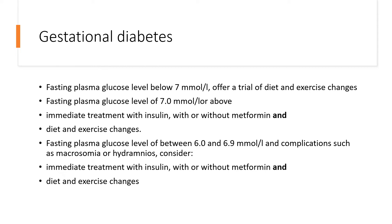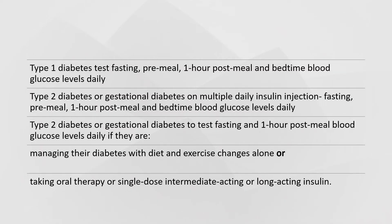If fasting glucose is just below 7, advise diet and exercise changes then review in one to two weeks to decide if oral treatment is needed. For type 1 diabetics, testing should be fasting, pre-meal, one hour post-meal, and bedtime blood glucose — daily. The same applies to type 2 diabetics and GDM patients on multiple daily insulin injections. Type 2 diabetics and GDM patients on diet and exercise only, oral therapy like metformin, or single-dose intermediate or long-acting insulin only need fasting and one-hour post-meal testing daily.